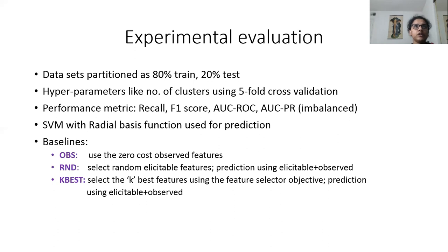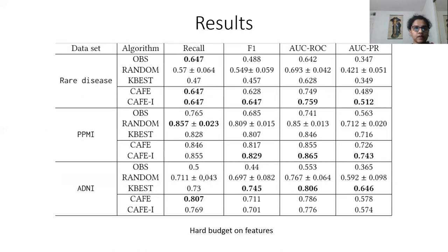Here are the results. These are experiments with hard budget on features where we fixed the number of features that can be acquired for every cluster. We see that CAFE performs better than the other three baselines on almost all the datasets.